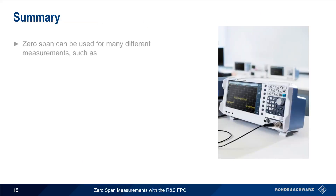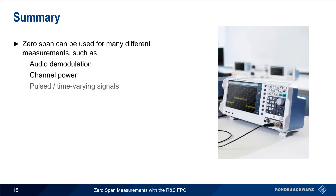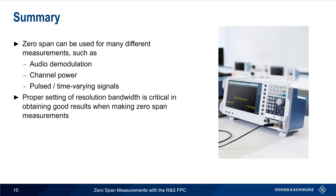Let's summarize what we've covered. Zero-span can be used for many different measurement types, such as the three examples we saw in this presentation: audio demodulation, channel power, and measurements of pulsed or time-varying signals. In all of these measurements, note that proper setting of the resolution bandwidth is critical in getting good results. Markers are also a useful tool in power versus time measurements. This concludes our presentation on zero-span measurements with the Rohde & Schwarz FPC. If you'd like to learn more about zero-span measurements or other spectrum measurements, please see the links in the video description.